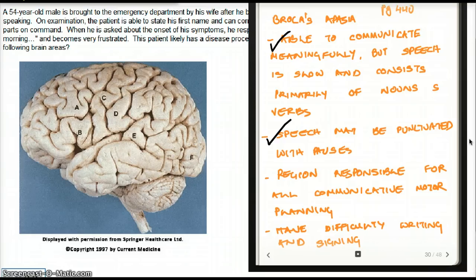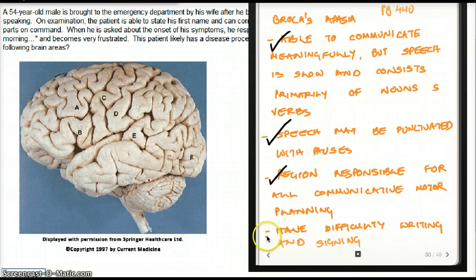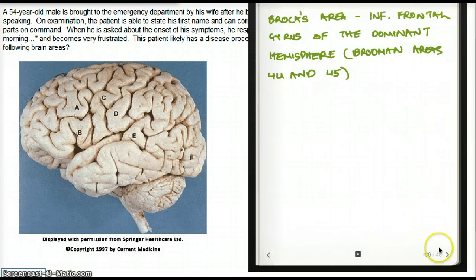Broca's area is the region responsible for all communicative motor planning. They plan what they're going to say — and even if it's writing, even if they're signing their name, that planning to sign is also governed by Broca's area. So they will have difficulty writing and signing. You might think this isn't about motor function of the hands, but they're planning to sign — so they're going to have difficulty signing any document. That's something interesting that I usually would not think of with Broca's aphasia.